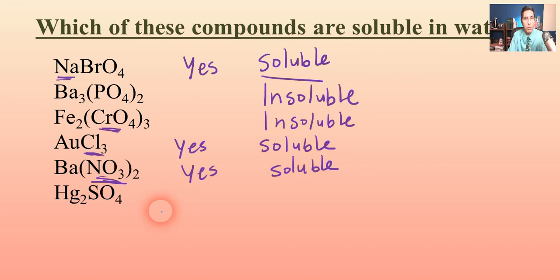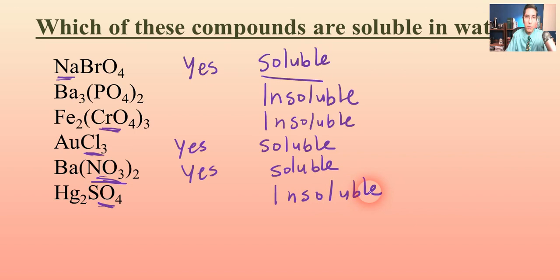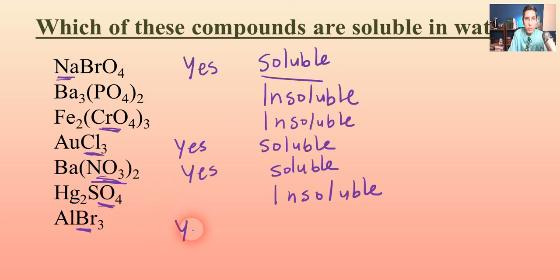Let's try mercury(I) sulfate. Most sulfates are soluble, but mercury is one of the six exceptions — along with silver, lead, calcium, strontium, and barium — so that one is insoluble. Finally, aluminum bromide: bromides are soluble except for silver, lead, and mercury, and aluminum is not one of those, so aluminum bromide is also soluble.